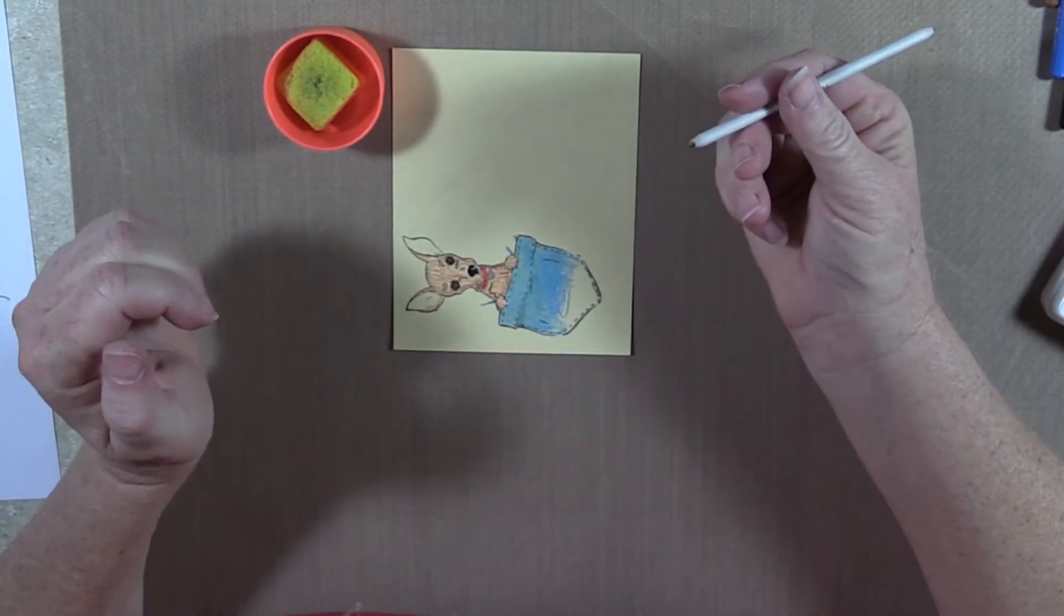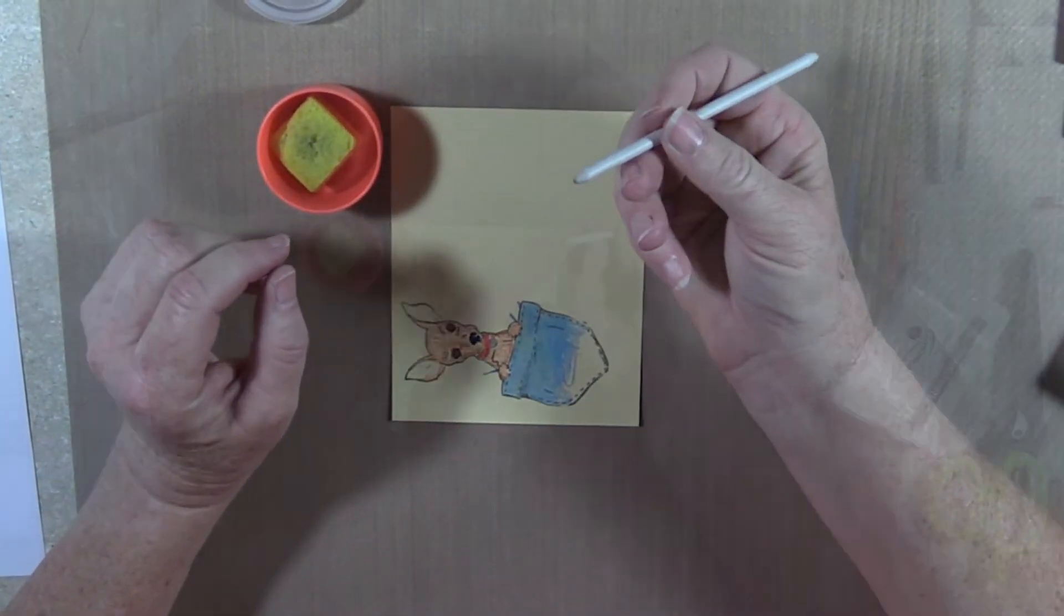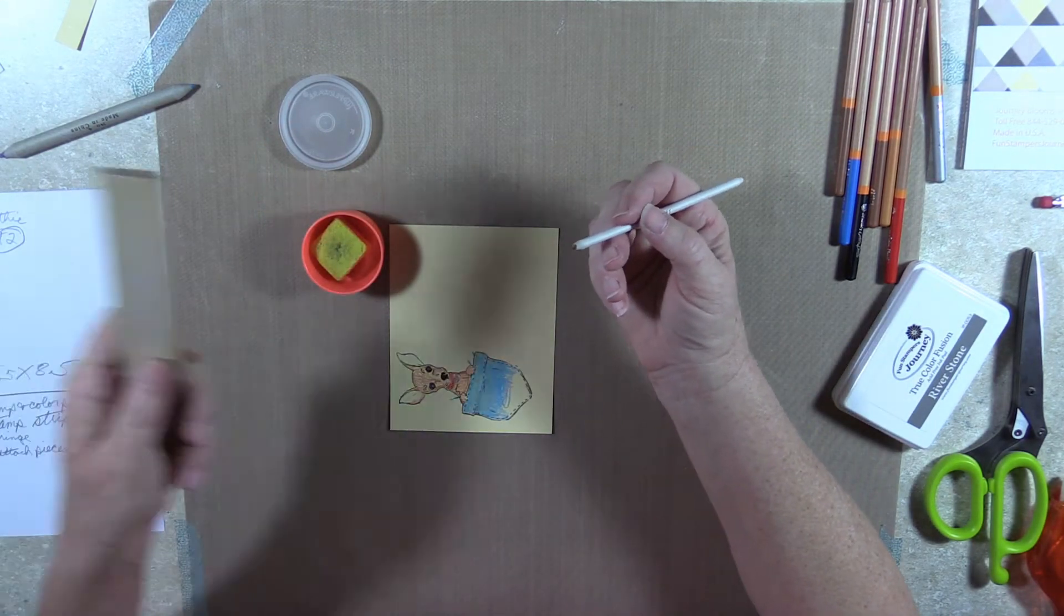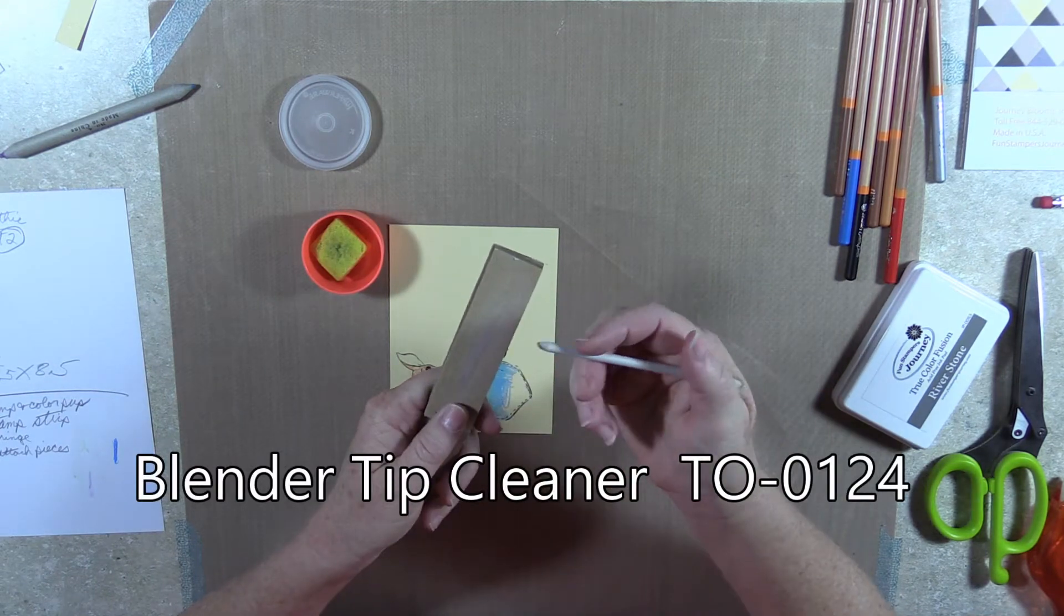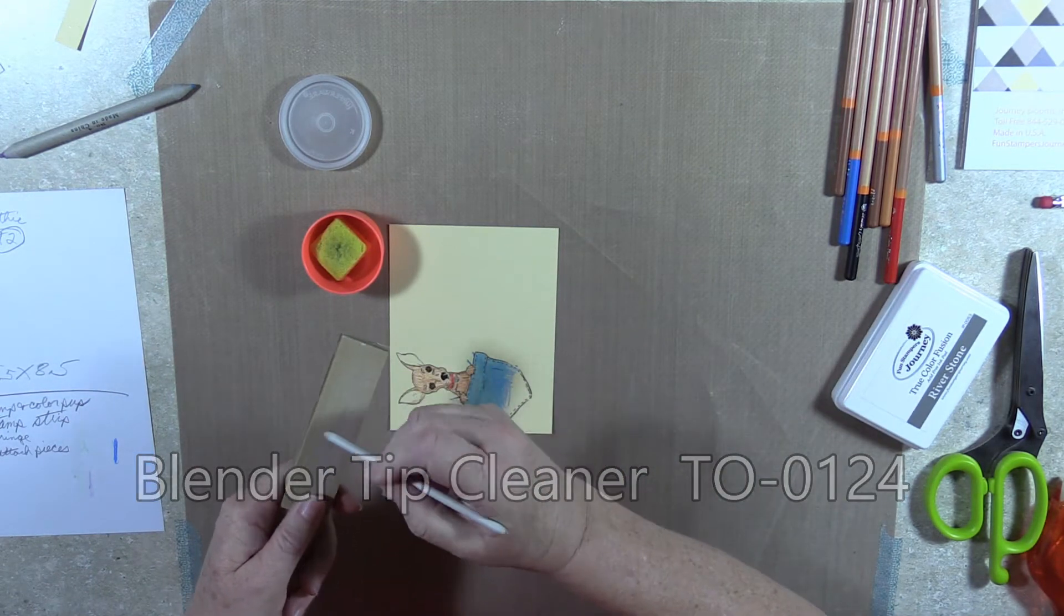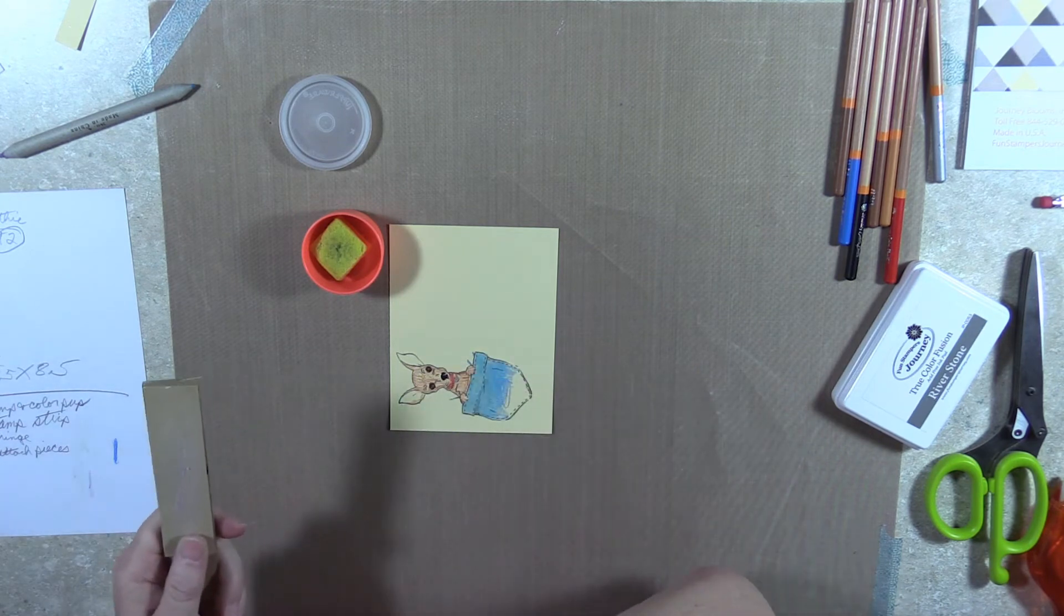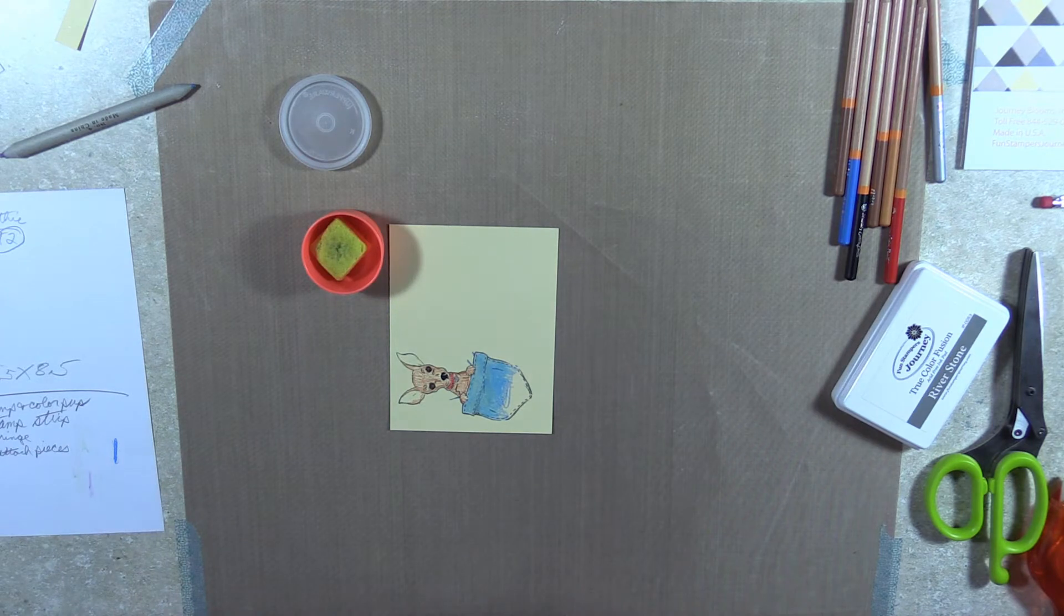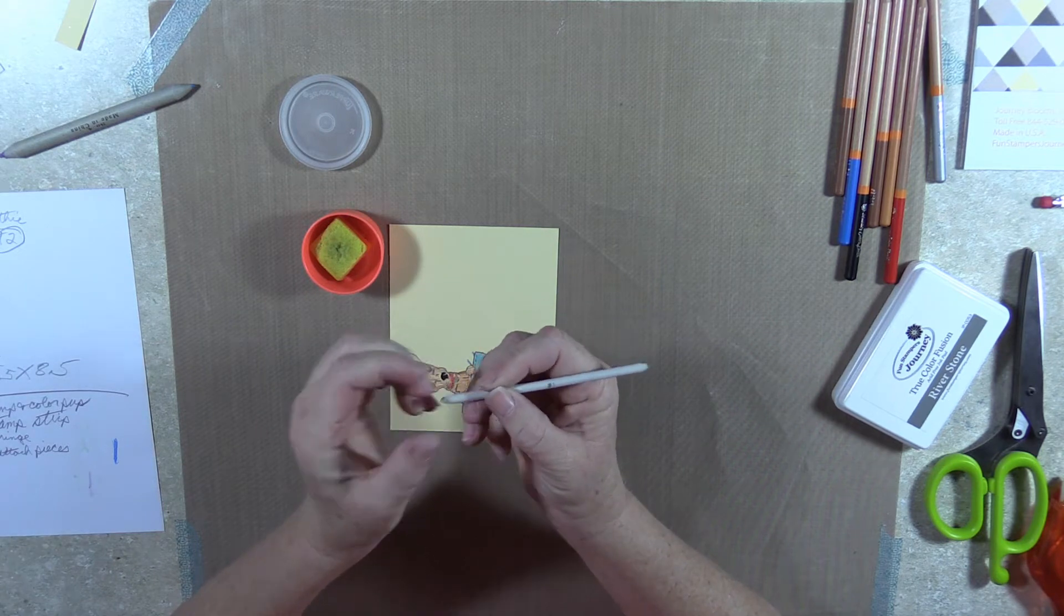I love our blending stumps. I really do. What you do is if you see color in the tip, we have a cleaner, which is a block of sandpaper. See? Then it's all clean. You can also, if they start getting dull, sharpen them so that you can get with our small one into little areas.